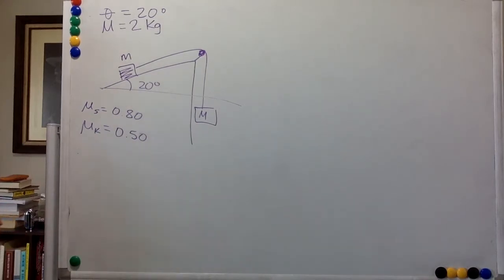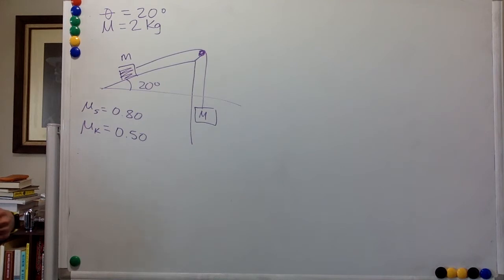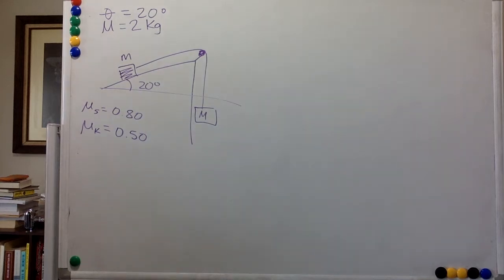What is the minimum mass m that will keep the system from slipping? And the second question: if we nudge this minimum mass even slightly, it will start being pulled up the incline — what is the acceleration that it will have?